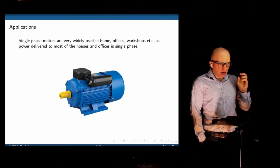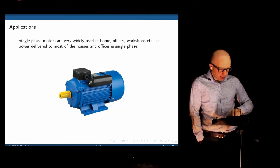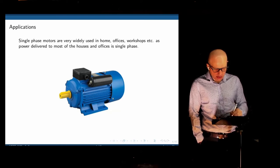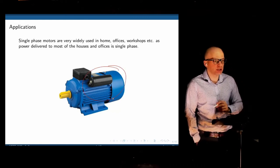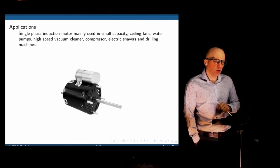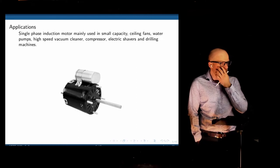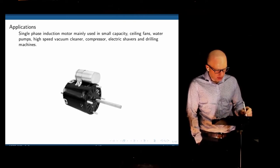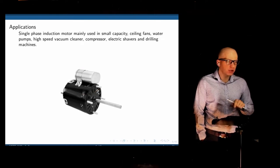Single-phase motors are widely available in homes. They are easy to fabricate and typically used in applications that require fixed speed. This is one single-phase motor — more of an industrial motor. You can recognize it as a single-phase motor rather than a three-phase motor because of this large capacitor attached here. We'll see what this capacitor does later, but it typically indicates we are dealing with a single-phase motor. Here we have one mostly used in appliances like vacuum cleaners, which typically run at a fixed speed. Ceiling fans are another application. You can also see the presence of a capacitor on this smaller motor.